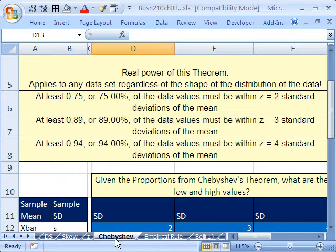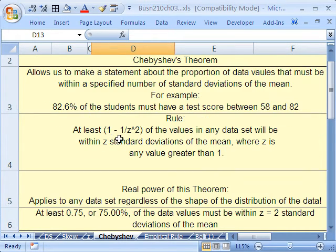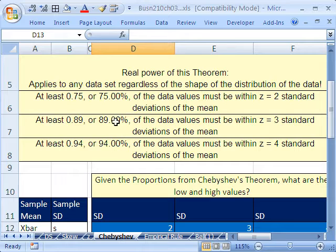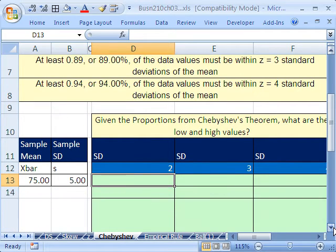The real power of this theorem is that it applies to any data set, regardless of the shape. Empirical rule, only bell. This theorem here, good for any data shape. Here's something we can say as a general statement without doing this math formula here: at least 75% of the values will lie within plus or minus two standard deviations, 89 plus or minus three, at least 94 plus or minus four standard deviations. Now, let's see a couple examples of how to apply this.